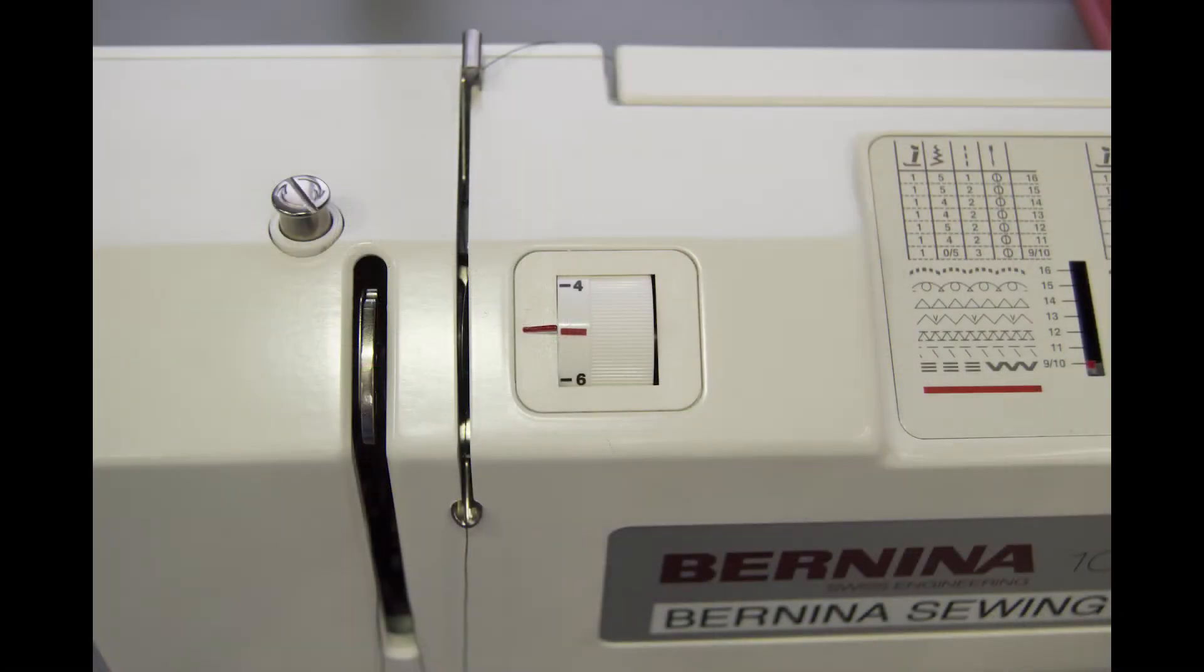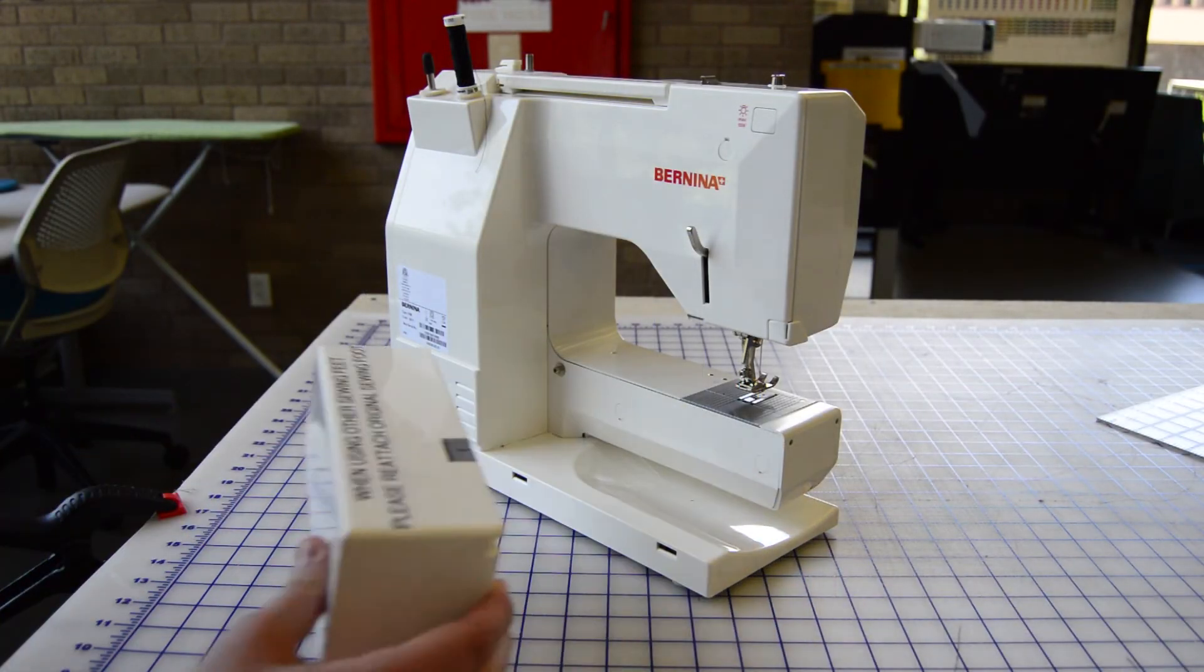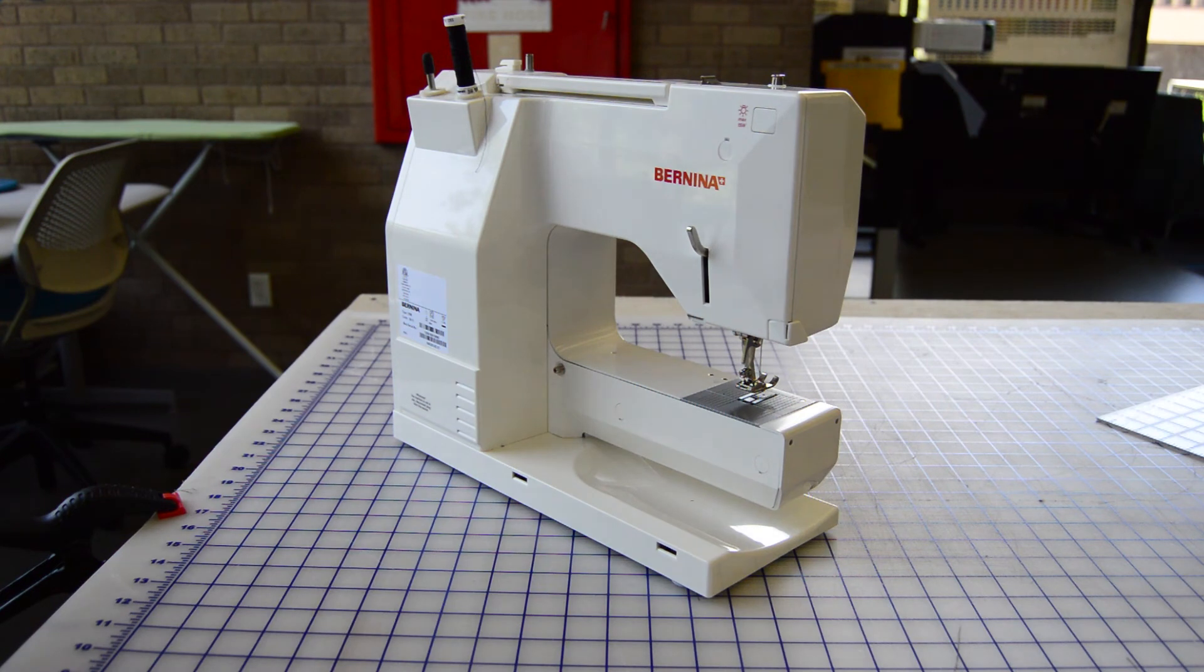Here we see the knob that adjusts tension on the thread. The storage compartment seen here on the back of the machine can be removed for easier stitching of smaller surfaces.